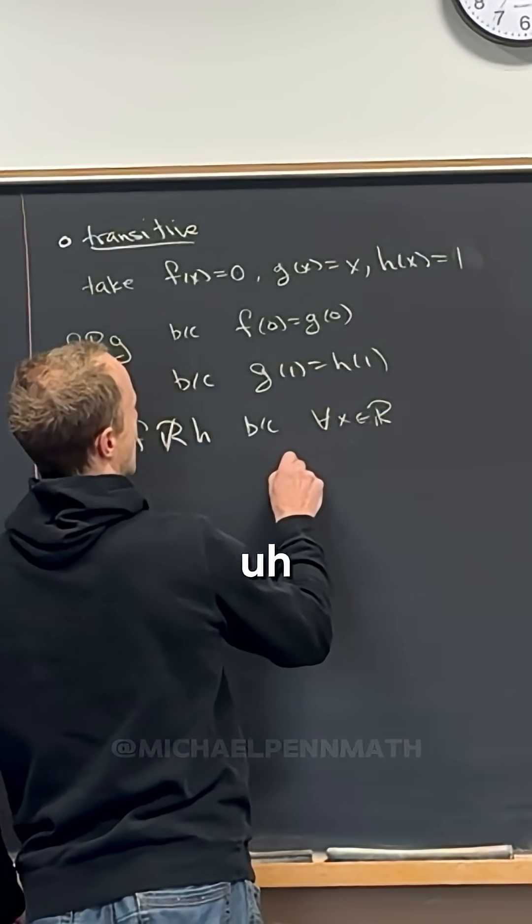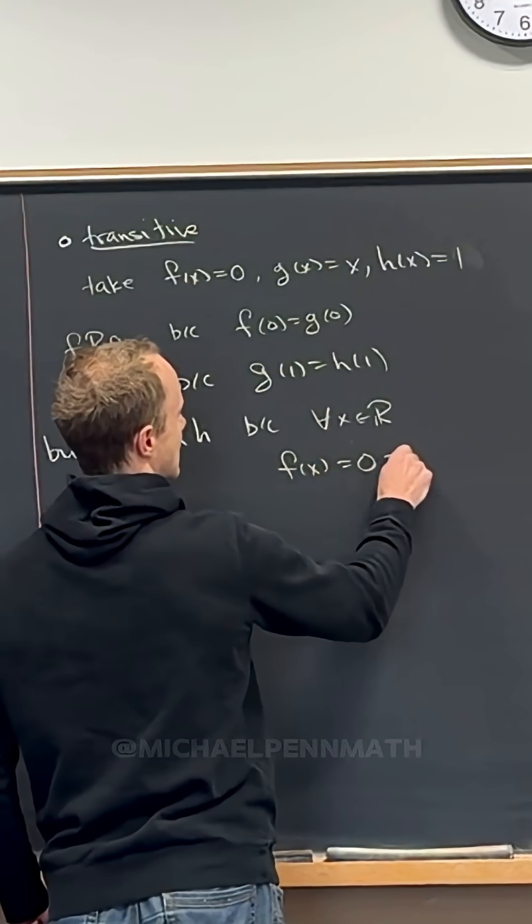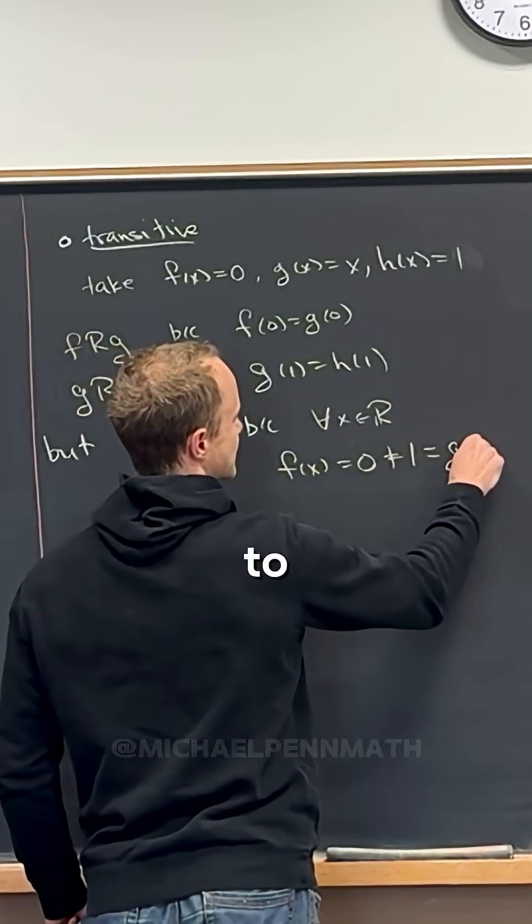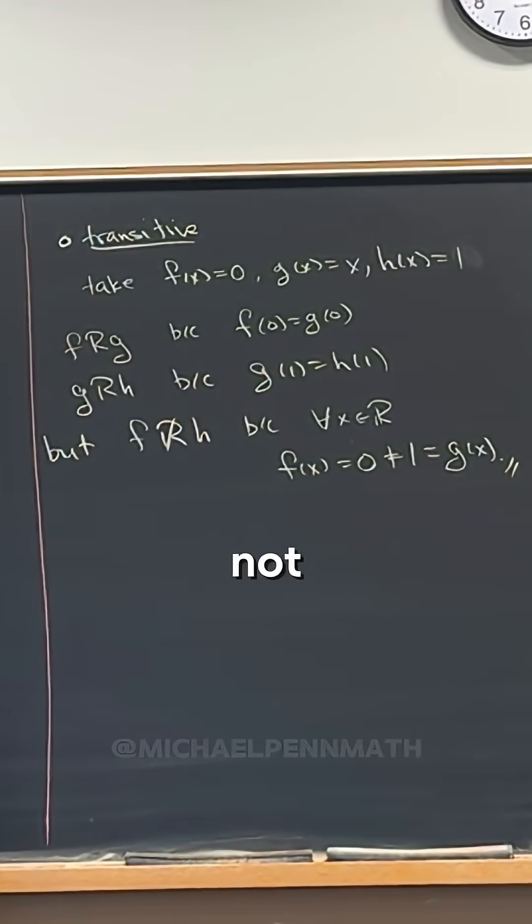...f of x, which is equal to zero, is not equal to one, which is equal to g of x. So it just comes down to zero not being equal to one.